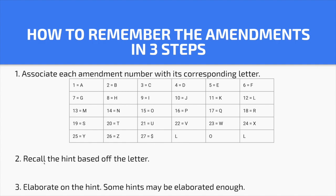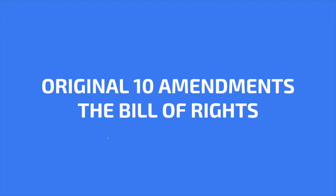The first step: associate each amendment number with its corresponding letter — the first amendment is A, the second is B, and so on. The second step: recall a hint based on that letter, so the first amendment hint starts with A, the second starts with B. The third step: elaborate on the hint. The first 10 amendments are the original Bill of Rights, which the Anti-Federalists pushed for when ratifying the Constitution.